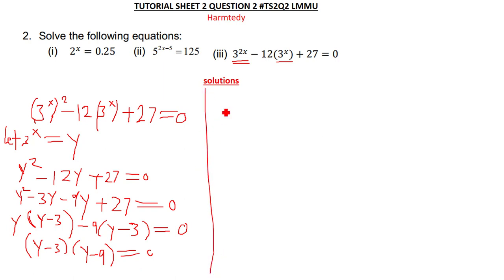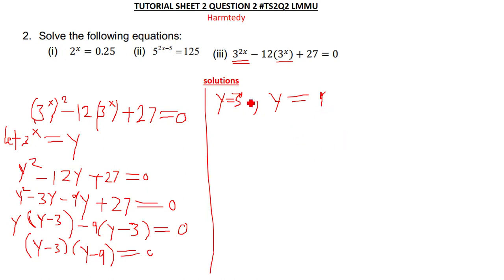Solving, we get y equals 3 or y equals 9. Now we recall that we let 3^x equal y, so we substitute back. For y equals 3: 3^x equals 3. For y equals 9: 3^x equals 9.